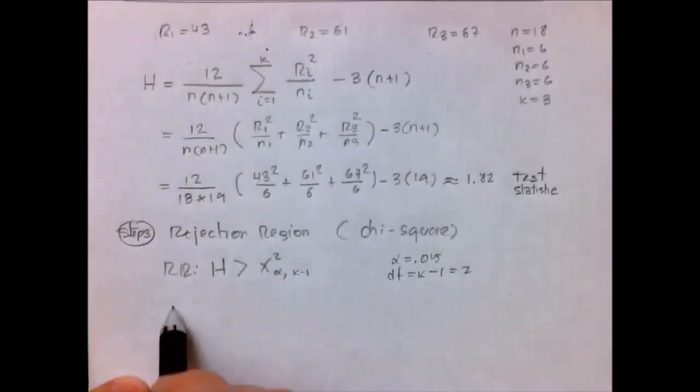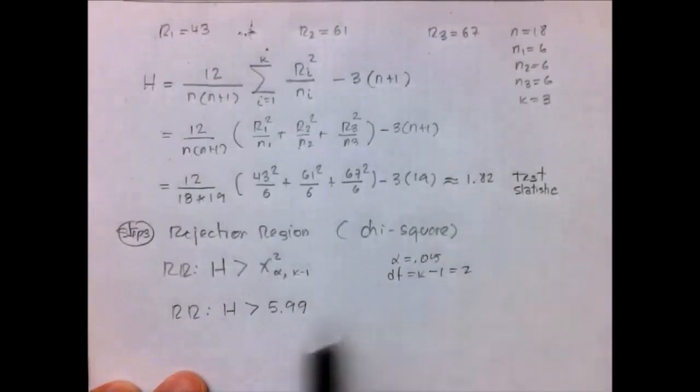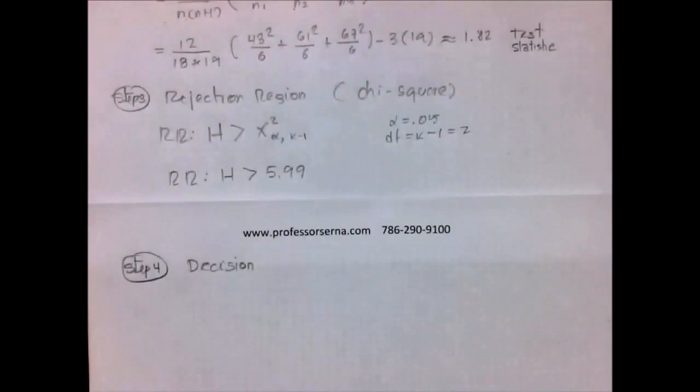Which means, and now we know that the rejection region is the values of the test statistic H that are greater than 5.99. Now the next question is going to be: does the test statistic fall in the rejection region? That will be step number 4. And the answer is, of course, no.